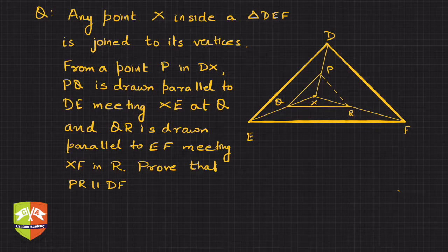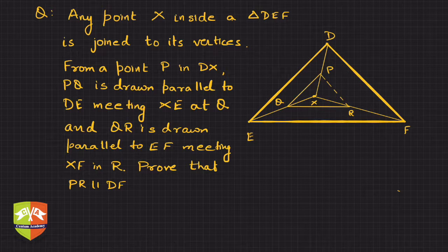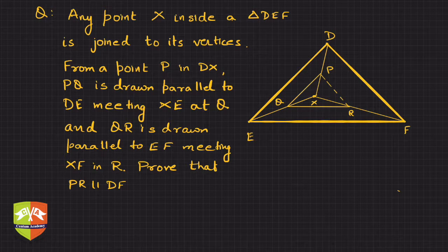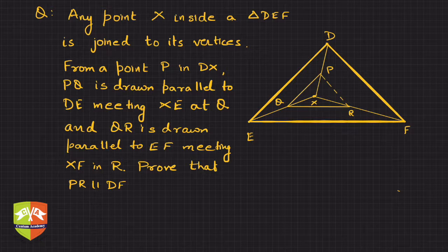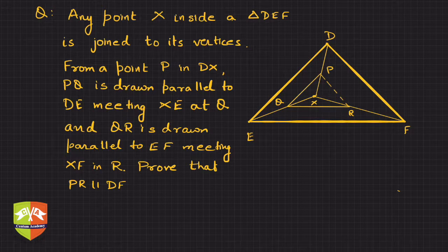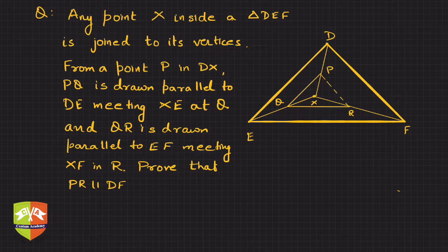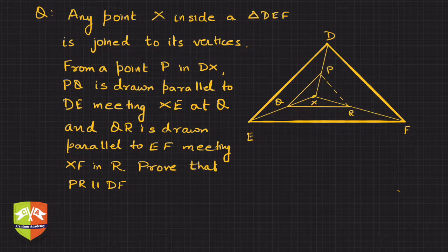Hi friends, welcome to another problem-solving session on triangles. In this question, it's given that any point X inside triangle DEF is joined to its vertices. So X is a point inside the triangle and it is joined to all three vertices D, E, and F.